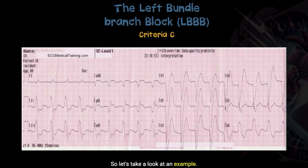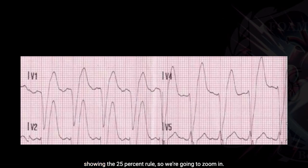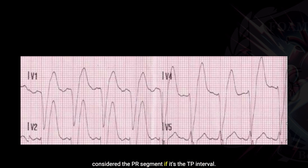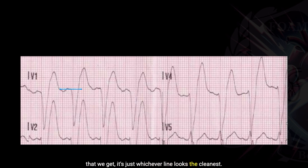Let's take a look at an example — I'm just showing the 25% rule. We're going to zoom into the anterior septal leads. What we do is we find the isoelectric baseline. There's some argument over whether this is technically the PR segment or the TP interval — really in the back of an ambulance with the artifact we get, it's just whichever line looks the cleanest.